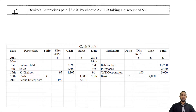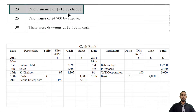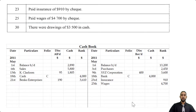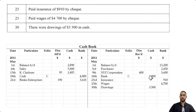On the 23rd, we paid insurance $910 by check, and on the 25th we paid wages $4,710 by check. Both are check payments going on the credit side under the bank column — making payments decreases the bank asset, so we credit it. The last transaction, on the 30th of May, shows drawings of $3,500 in cash. Drawings is where the owner takes cash for personal use, meaning the cash of the business is decreasing. Cash is an asset, so to record a decrease we credit the asset account — $3,500 under cash, going to drawings.